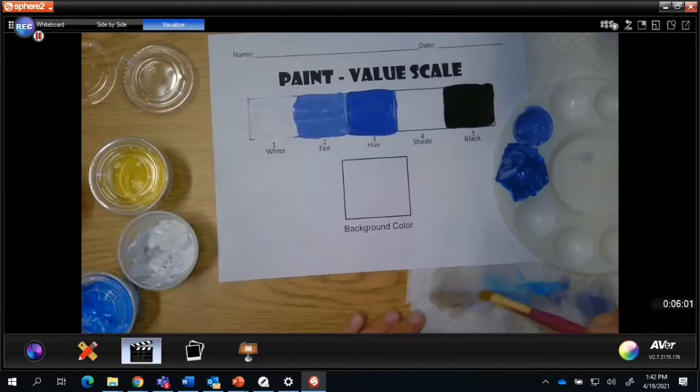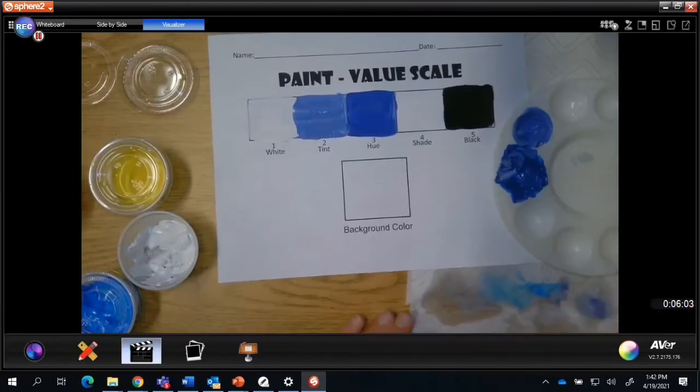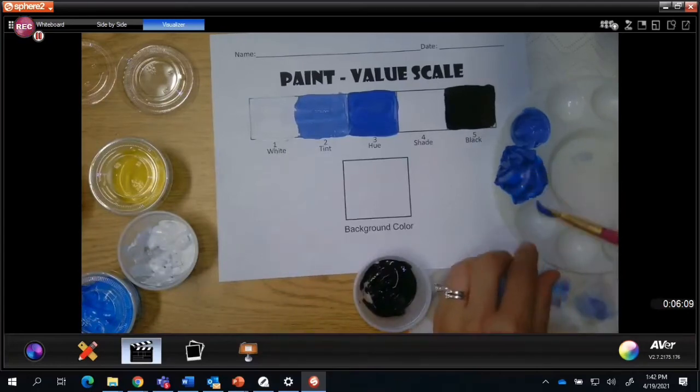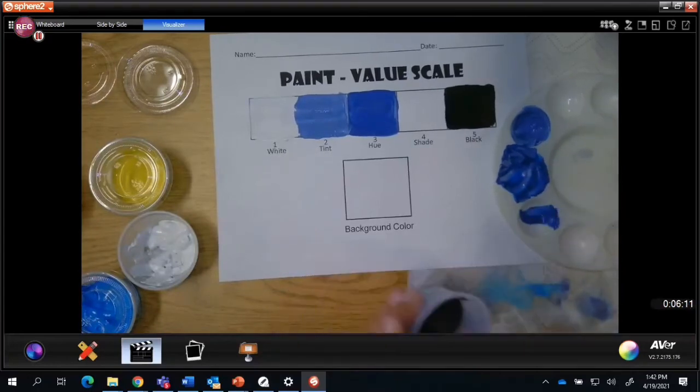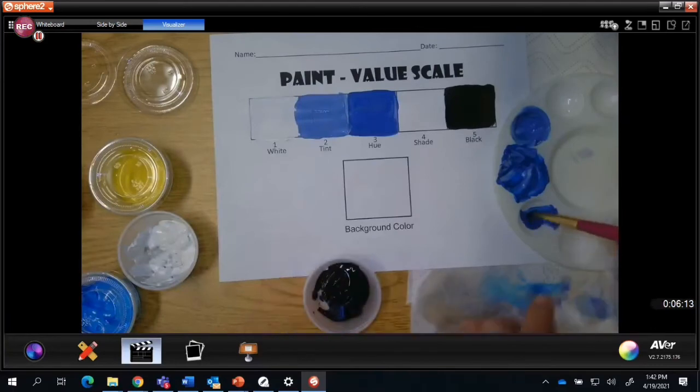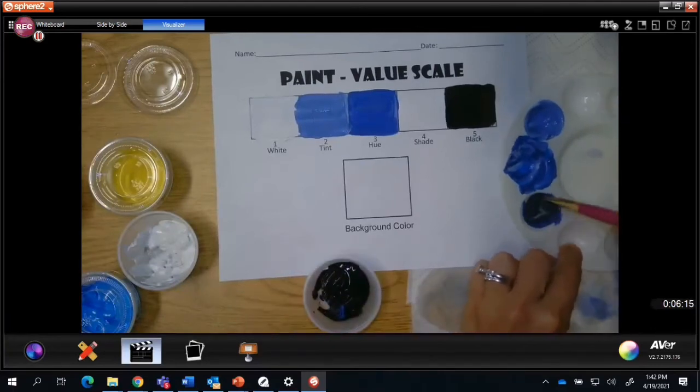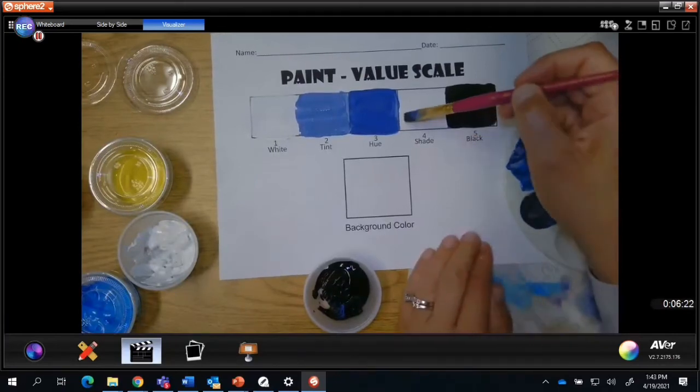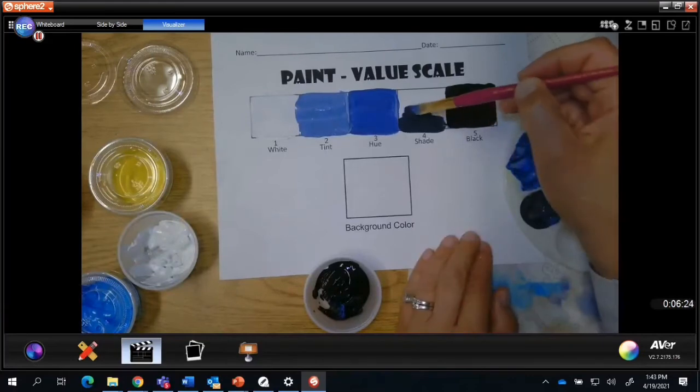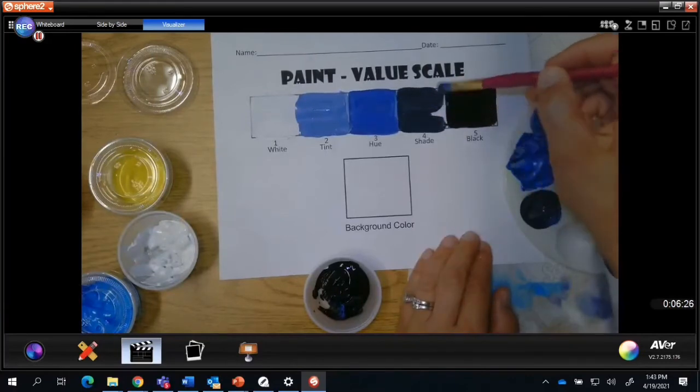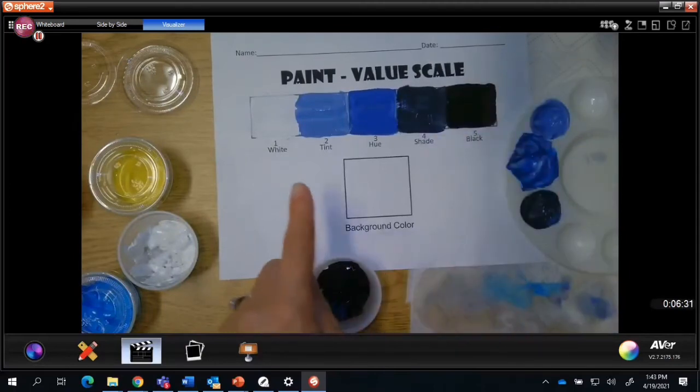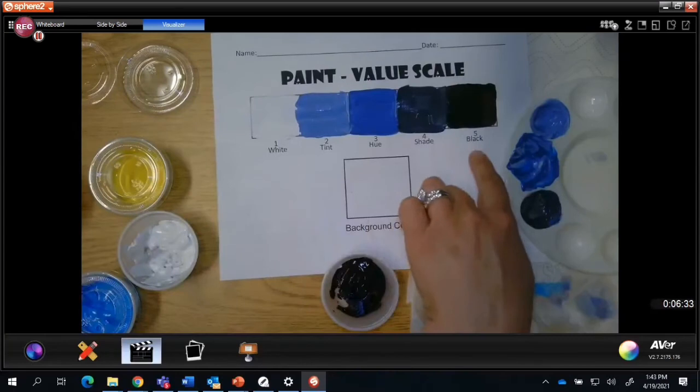I'm rinsing my brush and drying it off. Now I'm going to use some of this number three and add a small amount of black to darken the color. It should still look like the blue violet. I want my shade again to be about halfway between my three and my five.